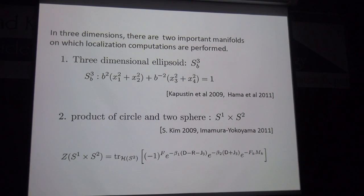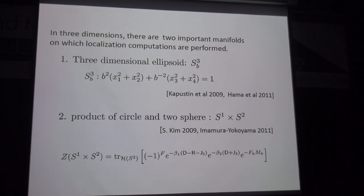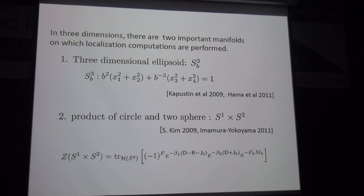The superconformal index counts particular BPS states. Its definition involves the trace formula where T expresses a translational charge along the S¹ direction, J₃ expresses a spin, F expresses a global charge, and the fugacities m_K, β₂, β₁ are associated with the global symmetries, R denotes the R-charge, and further fugacities are associated with the remaining global charges.